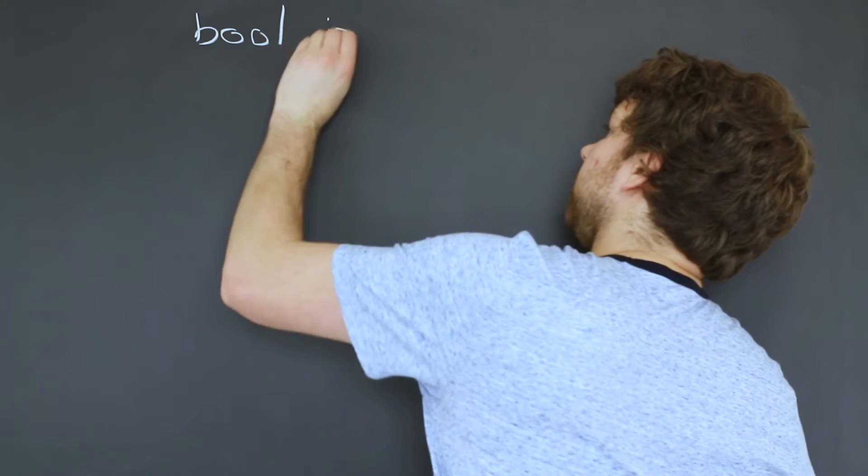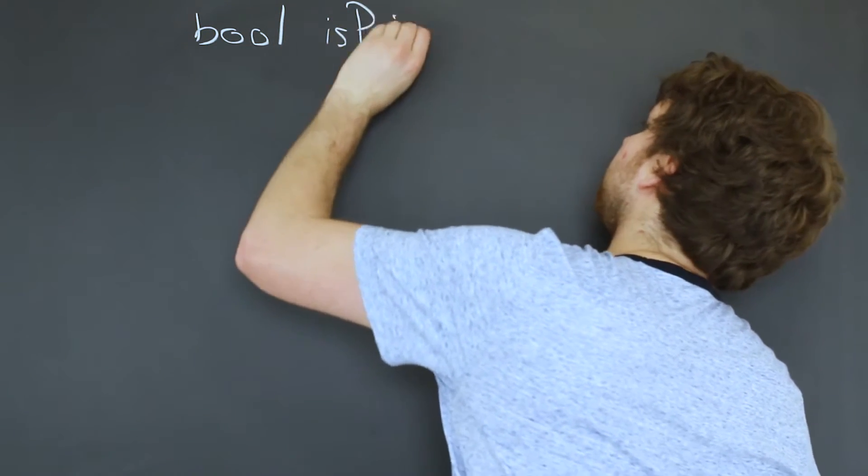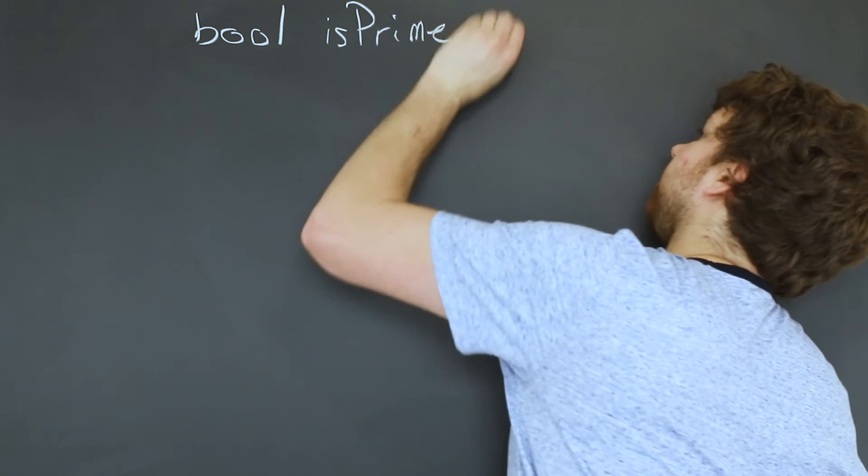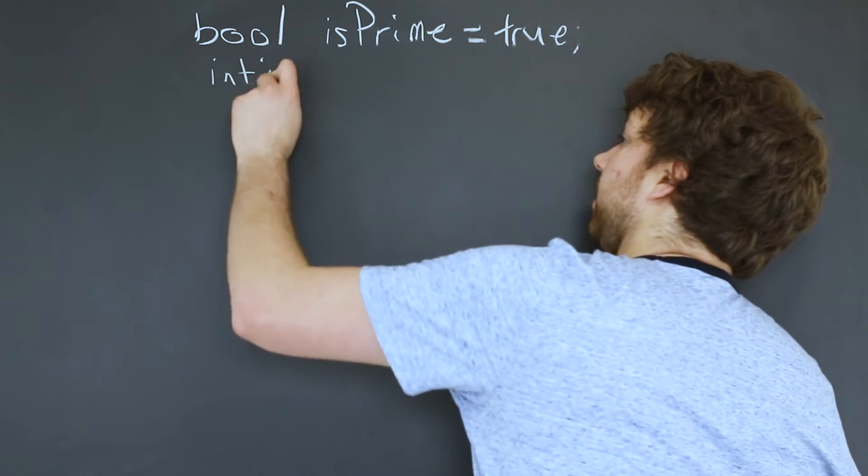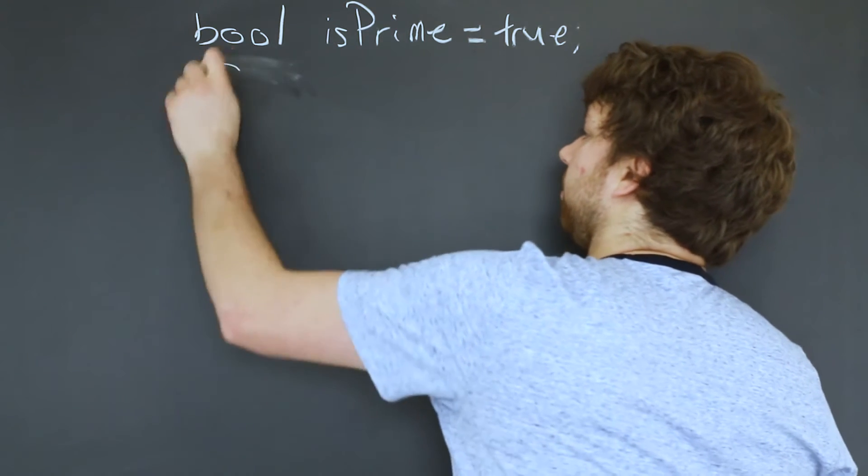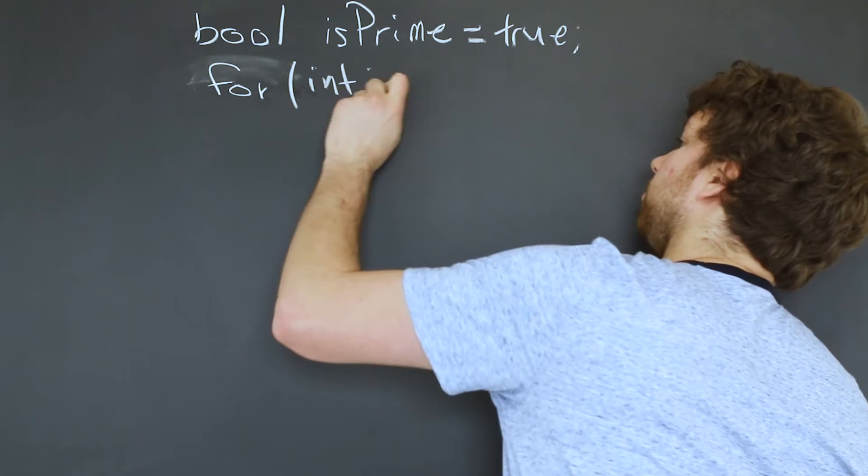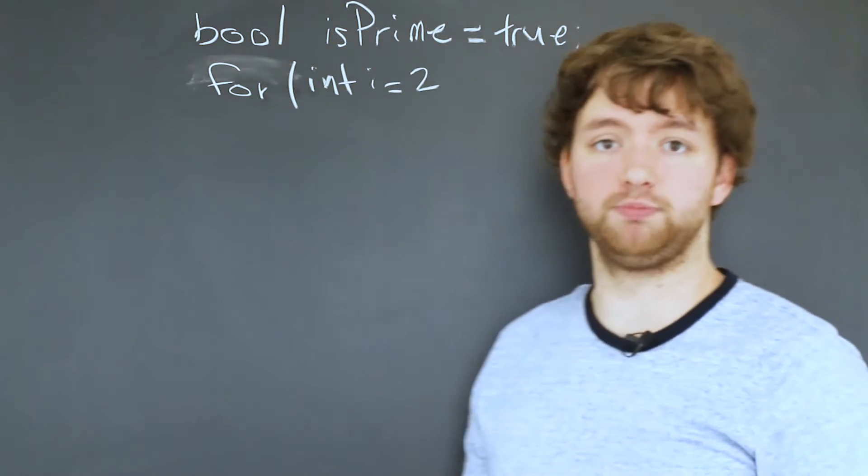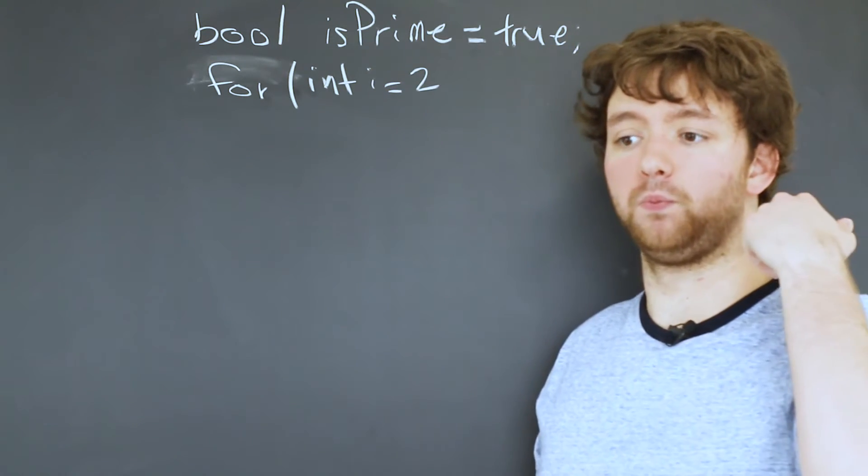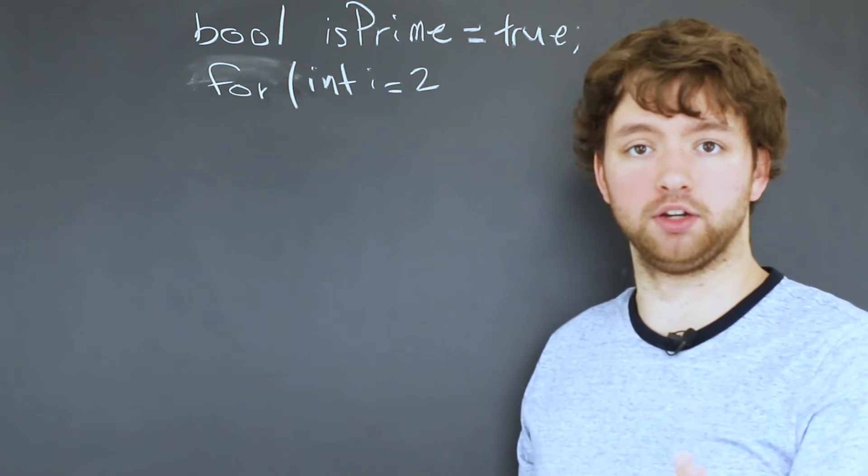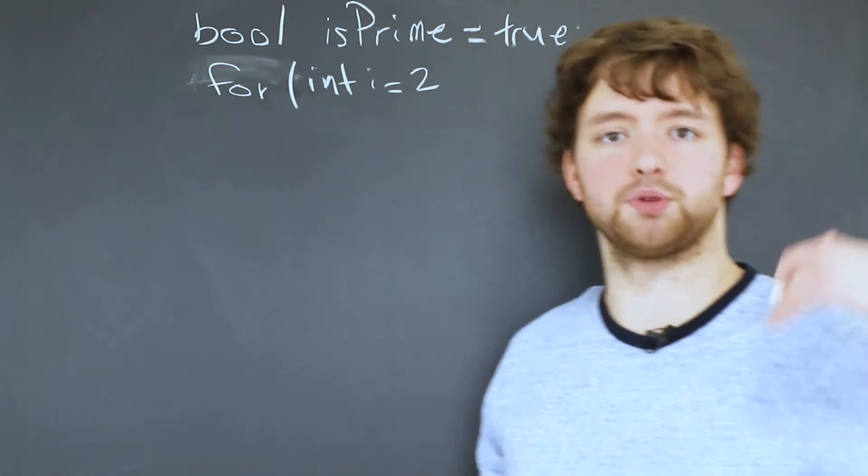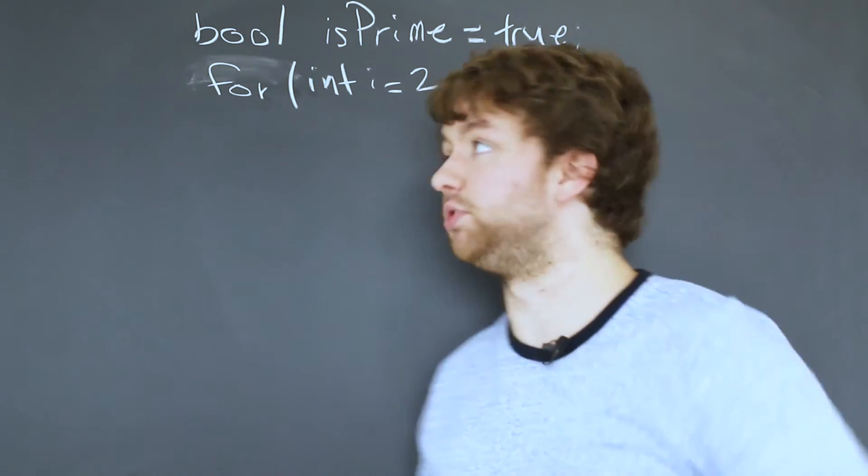So we'll say boolean variable isPrime and set that to true. Then we have a variable int i. We can just put that in the for loop. Int i equals two. We're starting at two because we don't have to worry about one or the number itself. We just start at two to get those middle numbers.